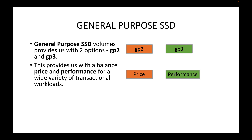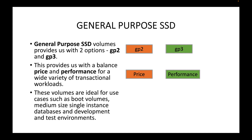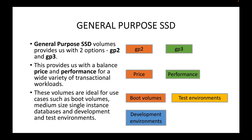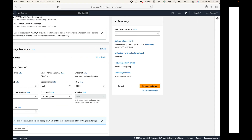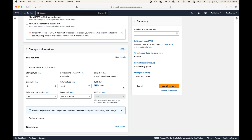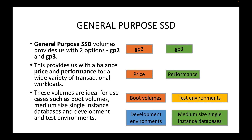General Purpose SSD provides a balance of price and performance for a wide variety of transactional workloads. These volumes are ideal for use cases such as boot volumes where you store OS-related information, medium-sized single instance databases, development environments, and test environments. With GP3 you get 3000 IOPS, and with GP2 you get somewhere between 100 to 3000 IOPS.